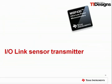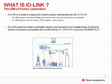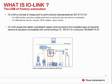The third TI design is the IO-Link sensor transmitter. IO-Link is a wired interface in the sensing loop, often called the USB of factory automation. It is a simple, low-cost, point-to-point protocol. IO-Link masters can have multiple ports with one device connected on each port, and IO-Link devices can be sensors, RFID readers, valves, motors, and more.